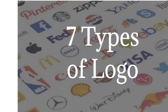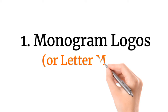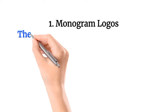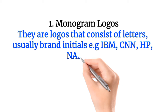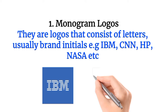Monogram logos, or letter marks, are logos that consist of letters, usually a brand's initials — for example IBM, CNN, HP, and NASA. As you can see on screen, we have IBM and NASA as examples.